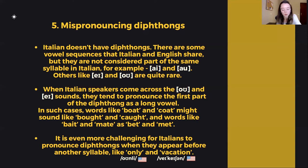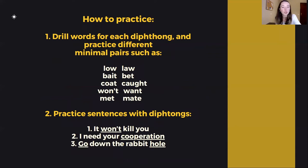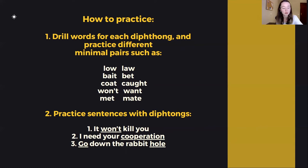This is the part that I would encourage you to practice, because this is a very common thing that is missing when Italian speakers speak English, and that's something that should be addressed. Drilling the words for each diphthong and practicing the minimal pairs might be a good idea. You can use the pairs I'm coming up with here, but you can also look for more pairs online.